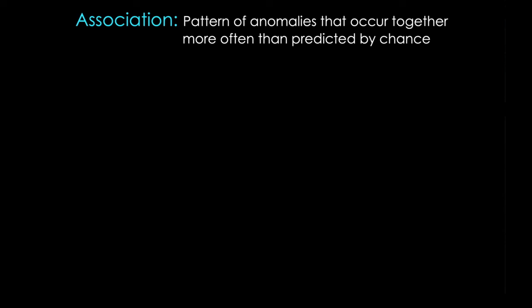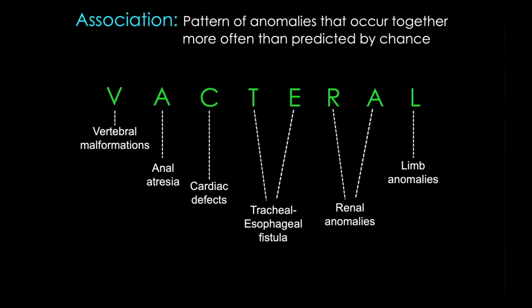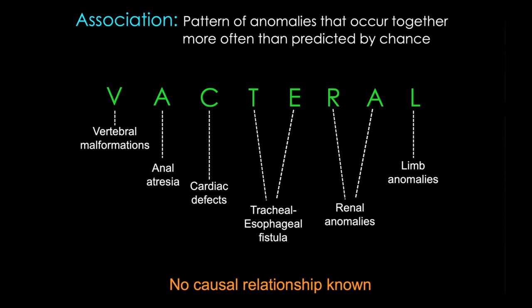Finally, we have an association. Associations are patterns of anomalies that are seen together more often than would be predicted by chance. Most associations are thought to actually be syndromes that we just haven't quite figured out yet. CHARGE syndrome was considered an association until quite recently, when researchers identified the single gene mutation that led to all the abnormalities. There are very few true associations — the most common is VACTERL, sometimes called VATER, where the anomalies occur together more often than by chance. This is a very common boards question.